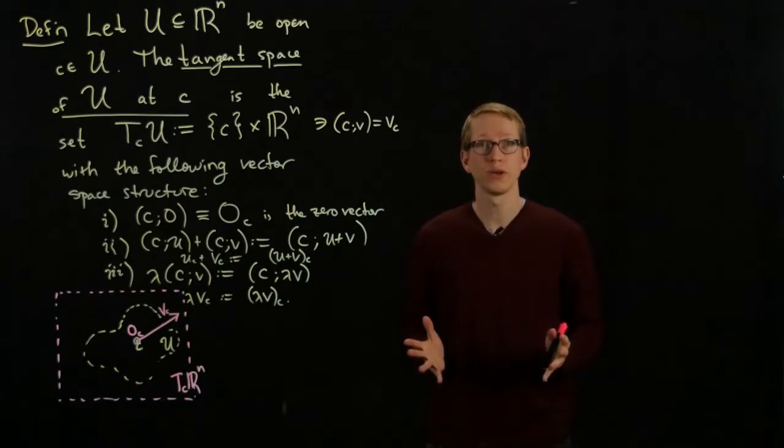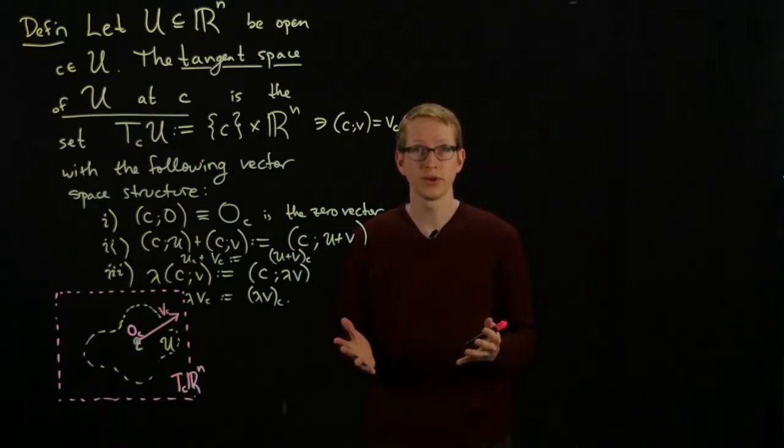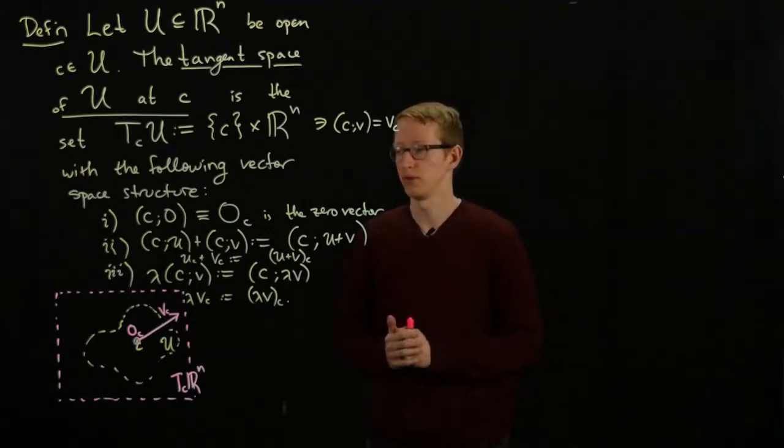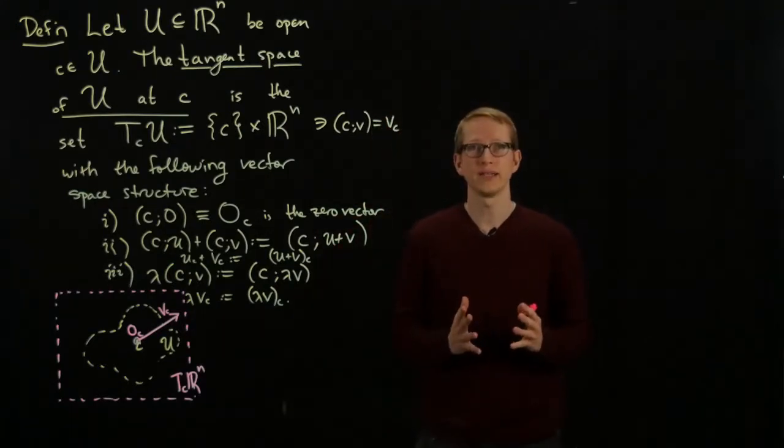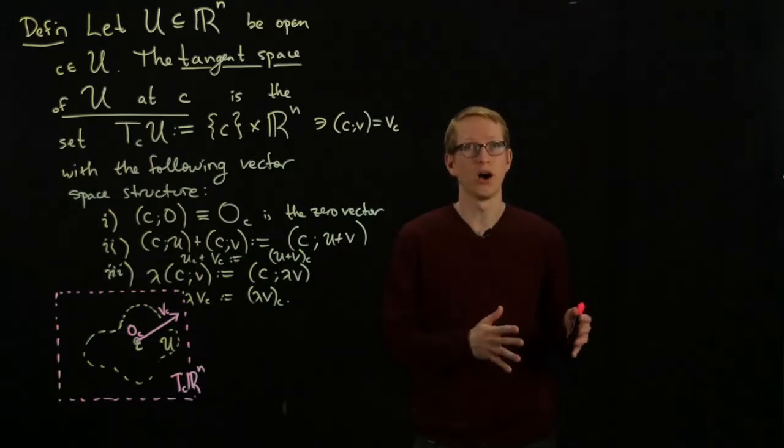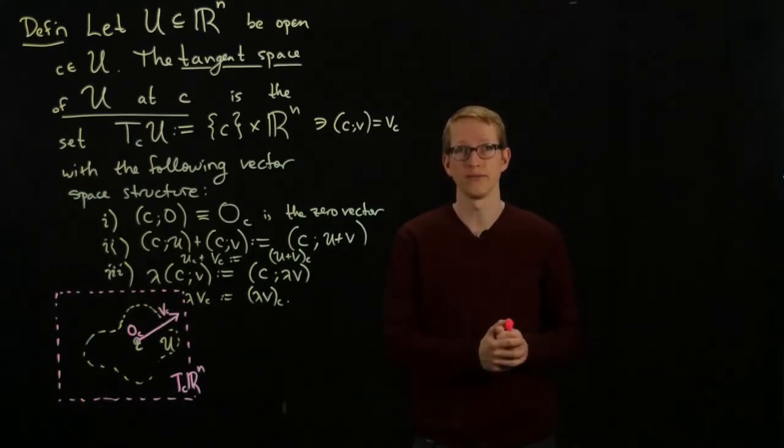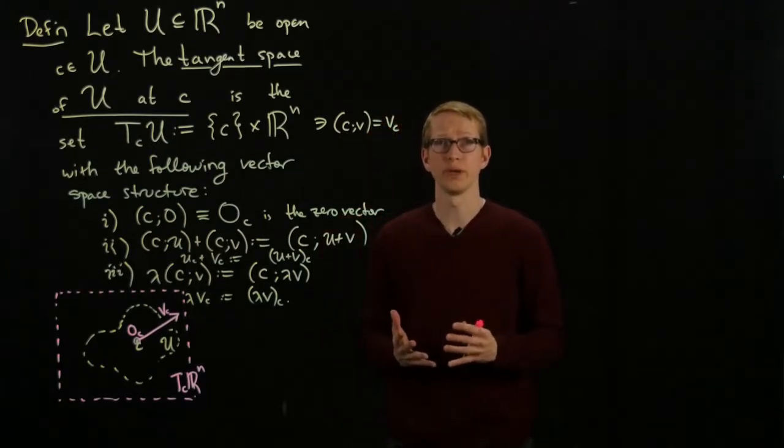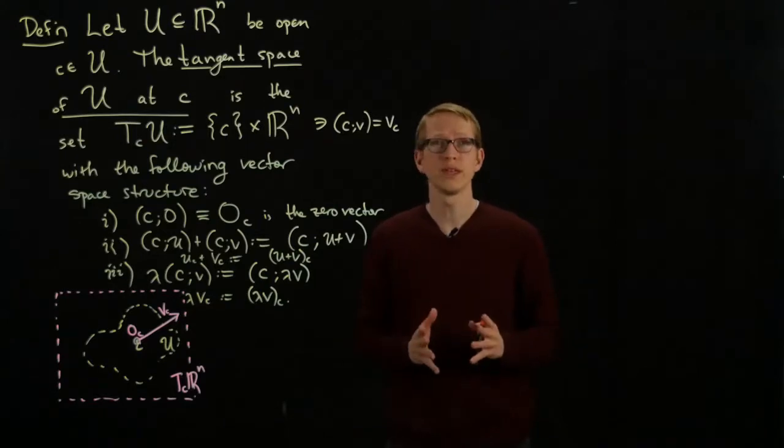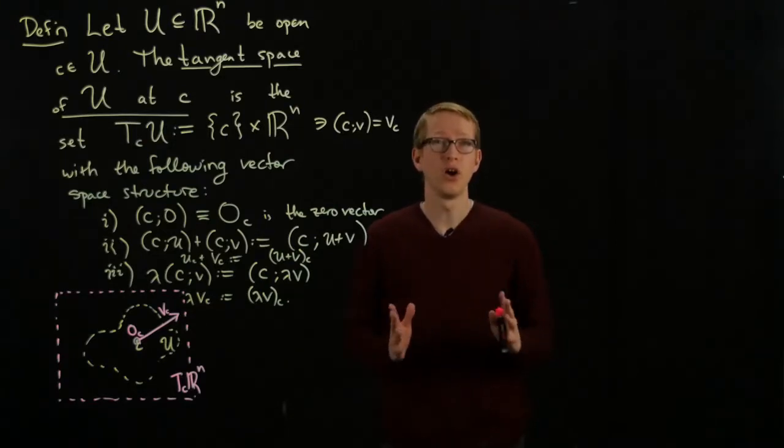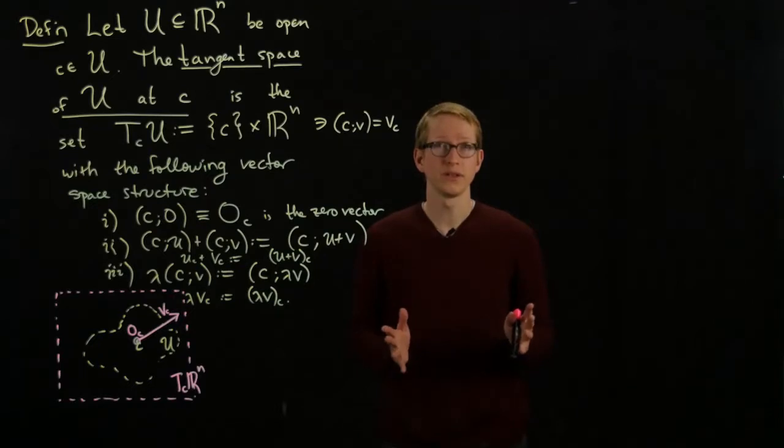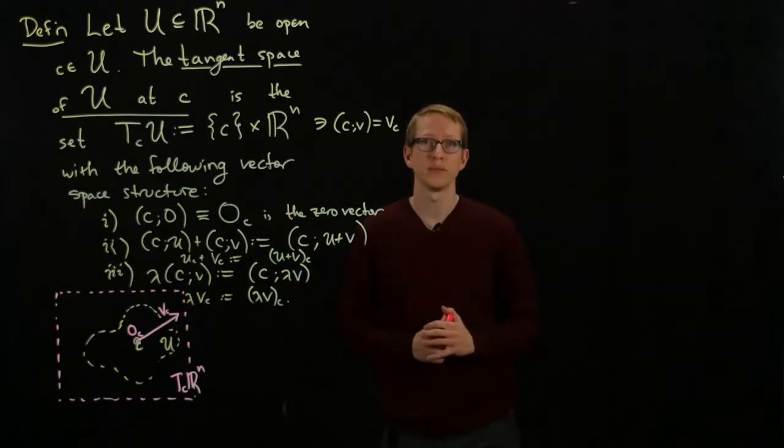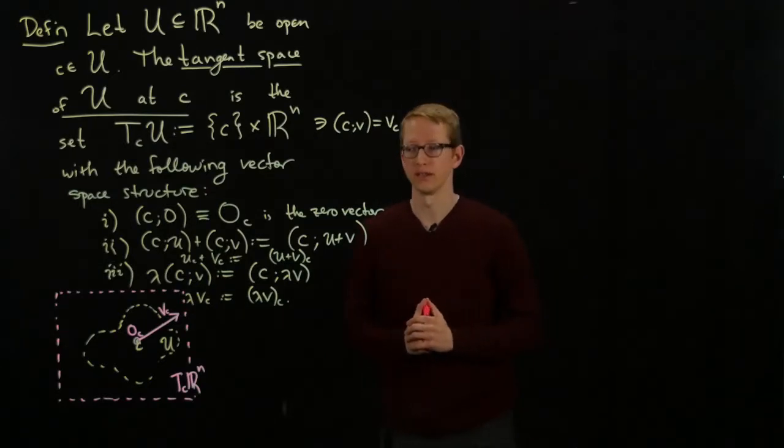This is actually something we've already been used to. Whenever we spoke about the differential of a function defined from one open set into the co-domain of some Euclidean space, the differential was defined to be a function from Rn, where n was the dimension of the domain, into Rm, where Rm was the co-domain. The differential acted on all vectors, so the domain of the differential is indeed all of Rn, regardless of what open subset f was defined on.